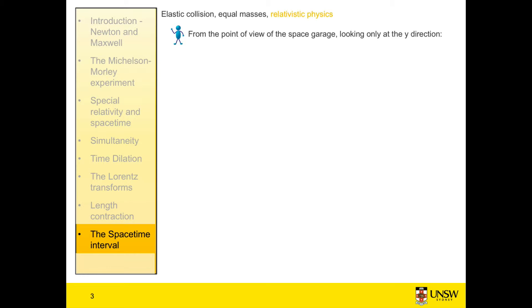So from the point of view of the space garage, or our mechanic, his ball, ball A, goes straight up and comes straight down again. So he sees the velocity of his ball in the x direction as zero, and in the y direction as u_y_0.